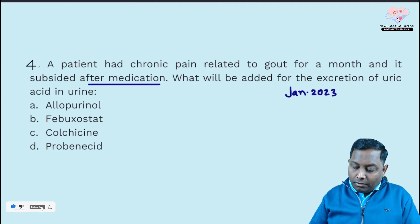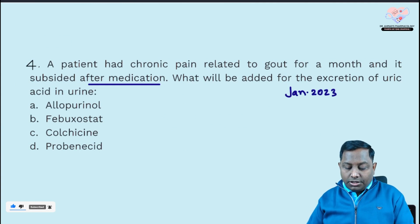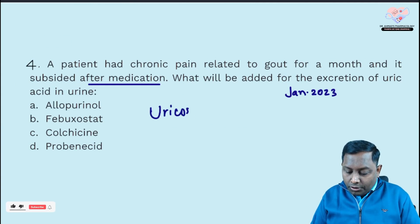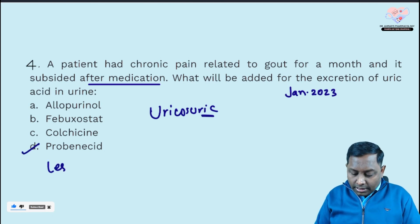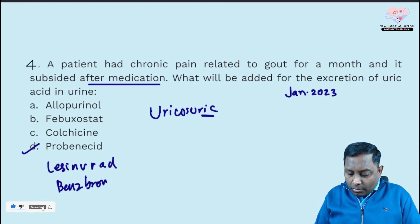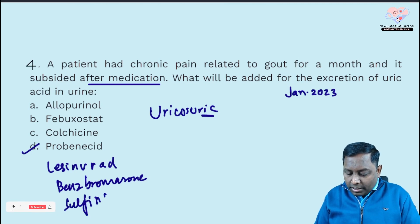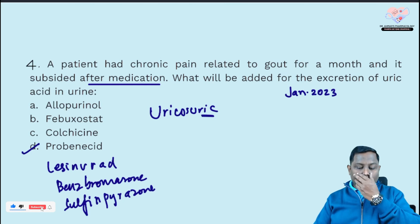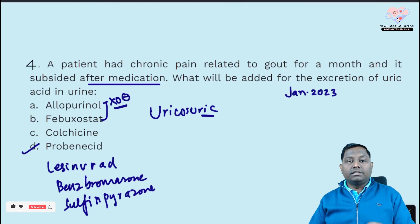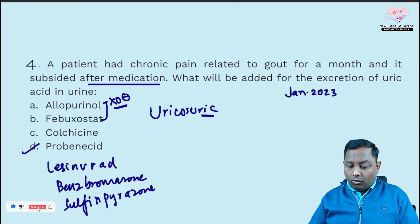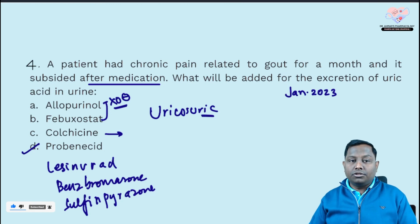The next question: a patient with chronic gout pain for a month — what agent will be added for excretion of uric acid? You need a uricosuric agent. Among the given options, probenecid is the uricosuric agent. Others in this class include lesinurad, benzbromarone, and sulfinpyrazone. Allopurinol and febuxostat are xanthine oxidase inhibitors — most preferred for chronic gout.